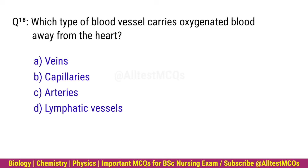Q18. Which type of blood vessel carries oxygenated blood away from the heart? Right option is C. Arteries.